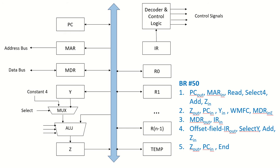We are discussing a single bus processor and in this video we are going to discuss branch instructions. Consider the example 'branch 50'. In branching instructions, the addressing mode used is PC-relative addressing. That means the offset mentioned in the instruction will be added to the program counter, and the next instruction will be fetched from that address.